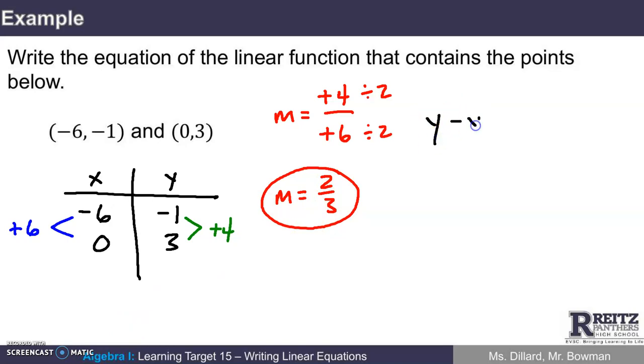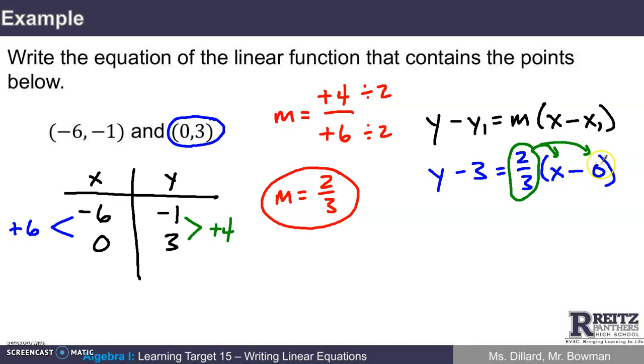And now I can write my line equation, y minus y sub 1 equals m times x minus x sub 1. Which point should I use? It doesn't really matter. I think I'll use this one. So I've got y minus 3 equals 2 thirds times x minus 0. Distributing my 2 thirds, I'm multiplying 2 thirds by 0, so I'm going to get y minus 3 equals 2 thirds x minus 0. So my finishing move to add 3 to both sides will give me a final answer of y equals 2 thirds x plus 3.